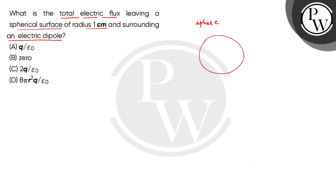The radius of this sphere is given as 1 cm and it surrounds an electric dipole. Electric dipole means two equal but opposite charges separated by some non-zero distance,